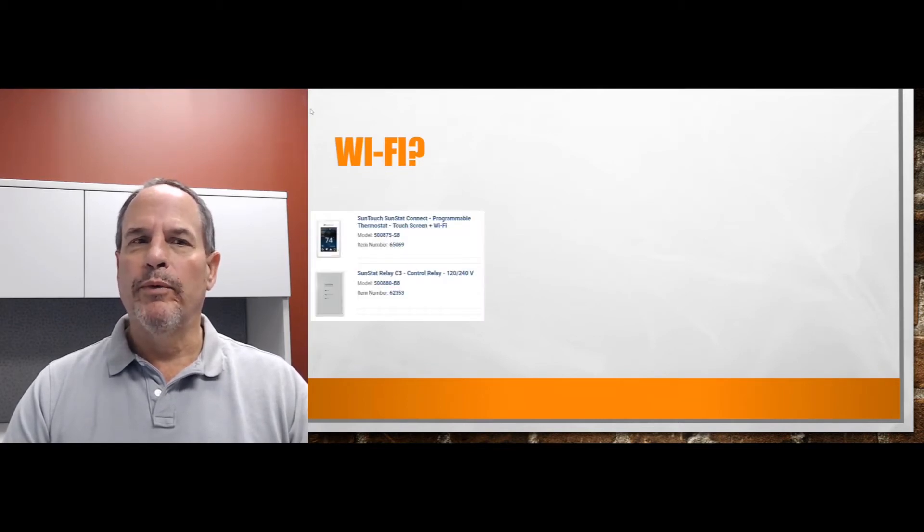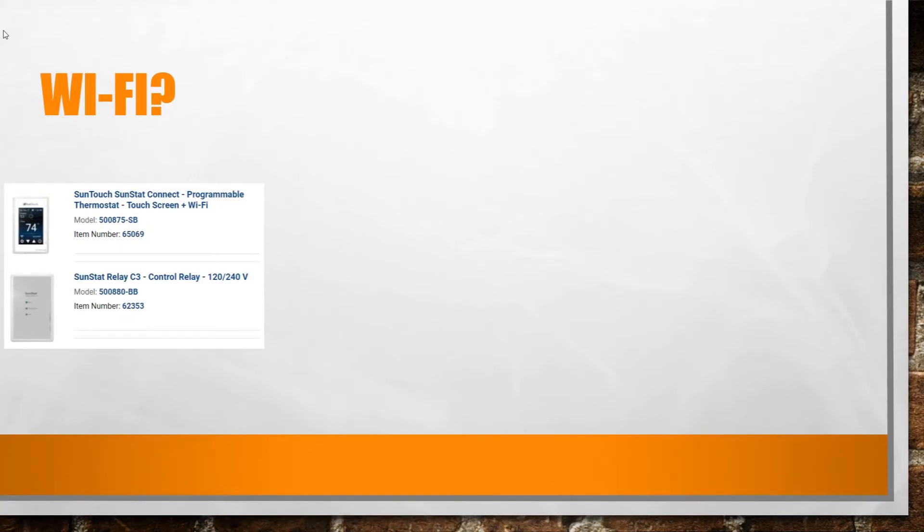The most common one that we use is a SunTouch SunStat thermostat - say that real fast - and that allows you to work up to a 15 amp 240 volt system regardless of whether it's an air handler, a floor heating element, or a baseboard heater.